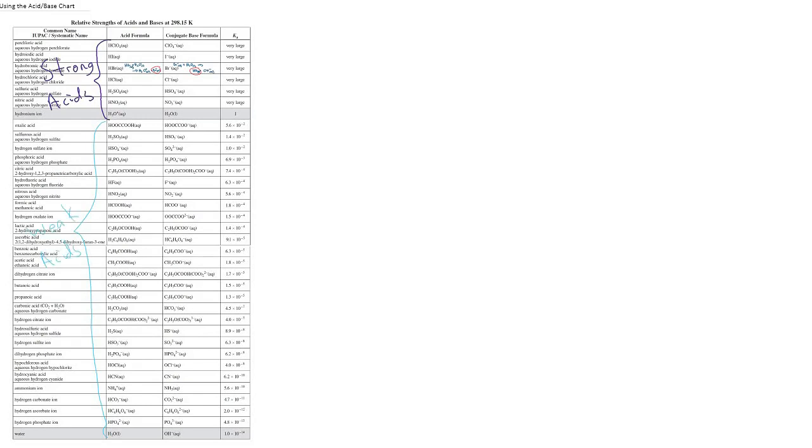And for bases it's kind of the opposite. So we mentioned already that if something is a very strong acid, it must be a weak base. But there's a bit of overlap. Actually the only strong base is the hydroxide right here.